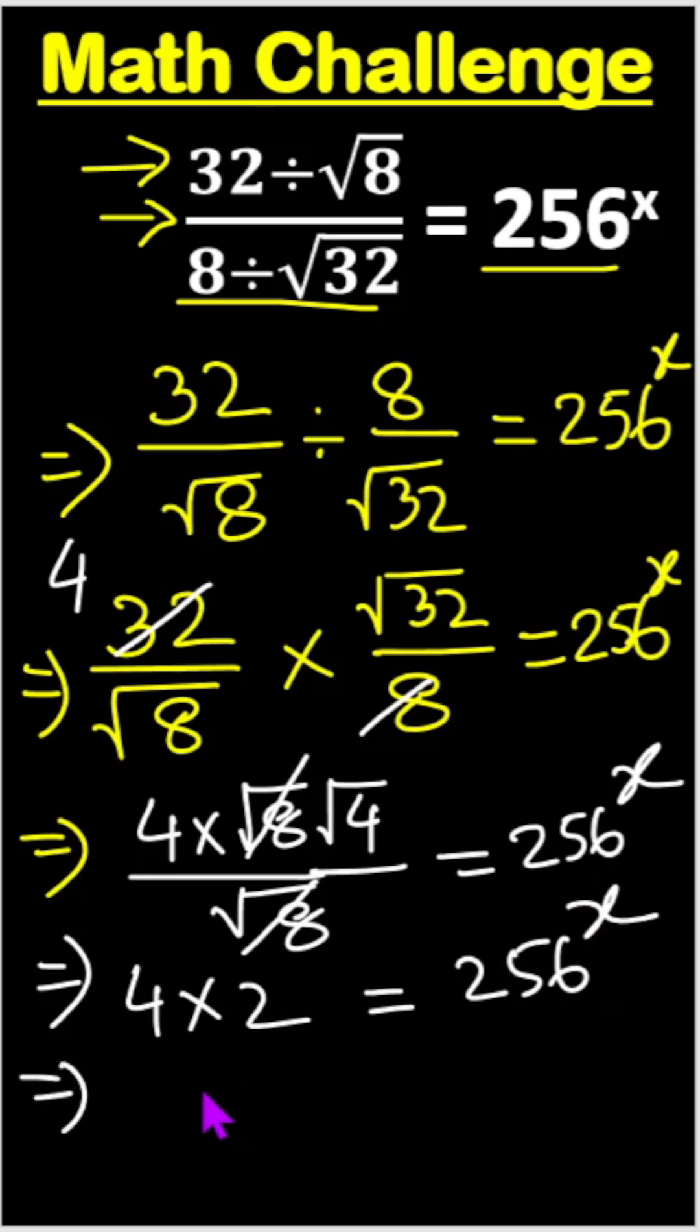And here is 8 and this one 256 to the power x. So it will be till unchanged to the power x. Now look, this 8 we can write 2 to the power 3 and this 256, we can write 2 to the power 8 and here is also x, so 8x.